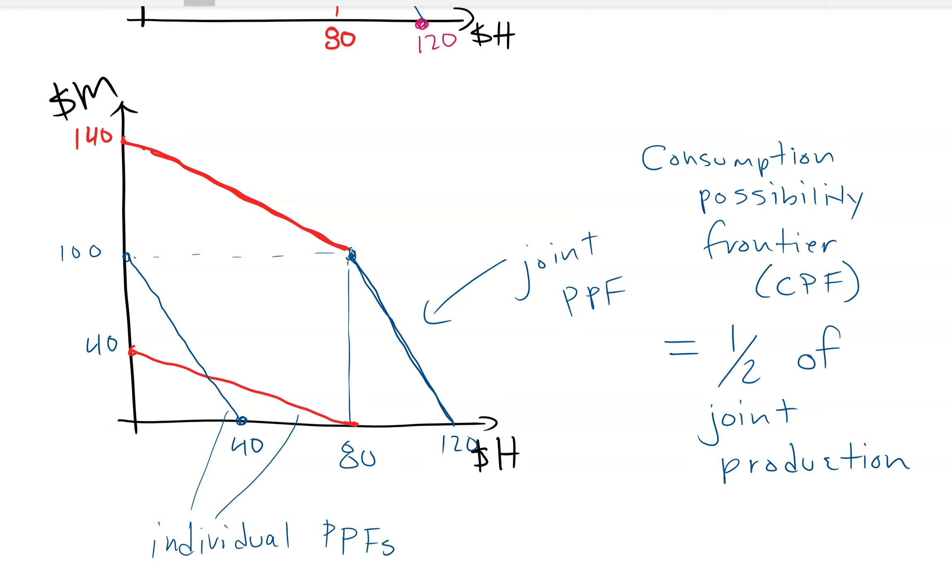But if it's not the case, we can analyze that as a separate issue. But for right now, we're assuming that they're sharing equally. So we need to assume something, and that's where we're going to start. So sharing equally means they share the production they got equally.